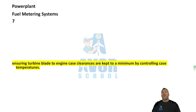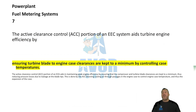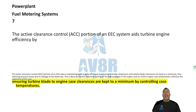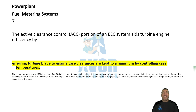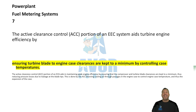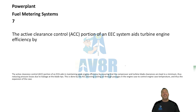Number seven: ensuring turbine blade to engine case clearances are kept to a minimum by controlling case temperatures. An active clearance control unit — a portion of the EEC system — aids turbine engine efficiency by ensuring that the turbine blade to engine case clearances are kept to a minimum by controlling case temperatures.